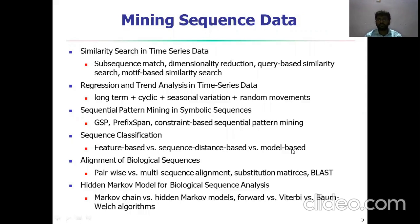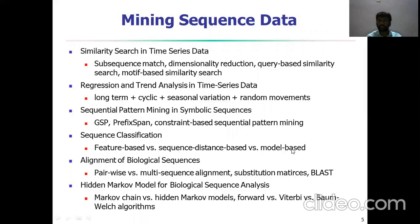Sequential pattern mining in symbolic sequences uses methods such as GSP (Generalized Sequential Patterns), PrefixSpan, and constraint-based sequential pattern mining. For sequence classification, we have feature-based sequence classification, sequence distance-based classification versus model-based classification. For example, using the K-nearest neighbor algorithm, the search process is performed by clustering or classification. You can use sequence-distance-based or model-based techniques depending on which model technique is applied.